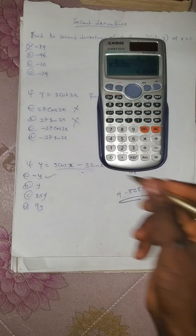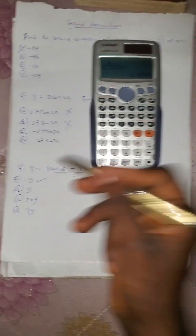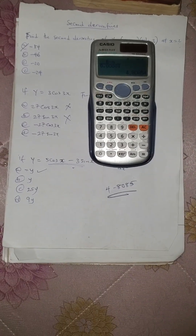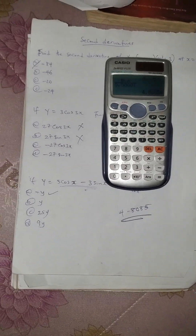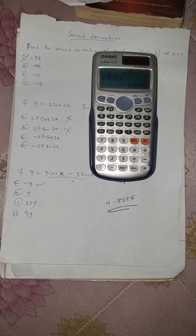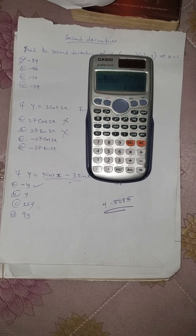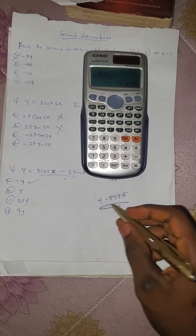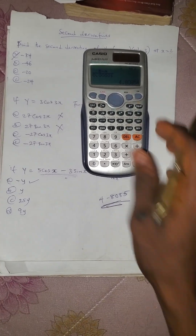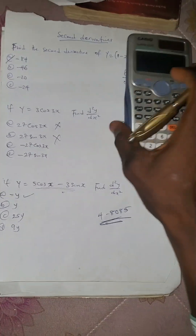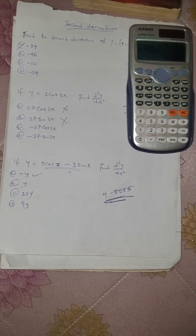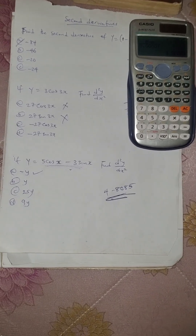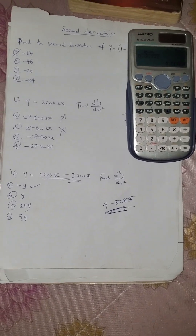Then compute alpha B minus alpha A, all over the constant 0.0001. Press equals — you can see the answer is 4.8085. This is the answer to the question. Let me have your answer in the comment section.